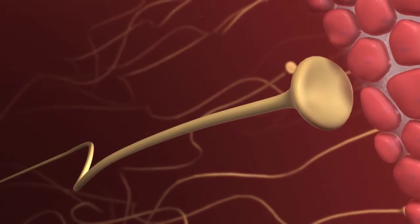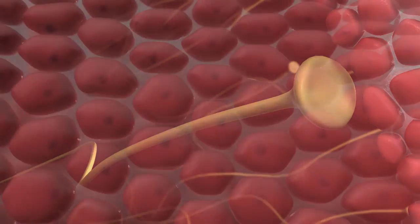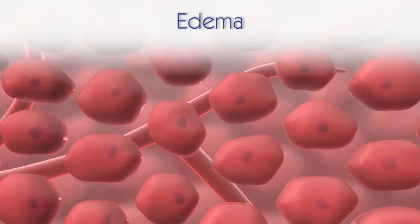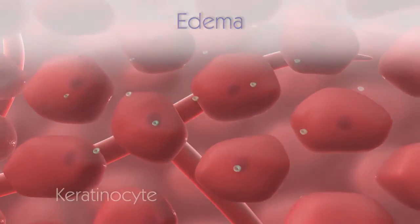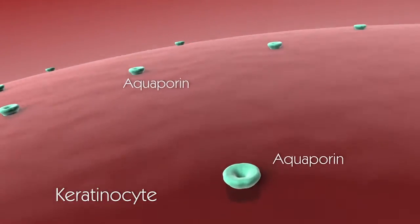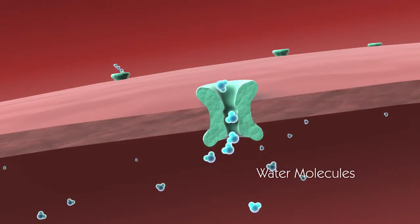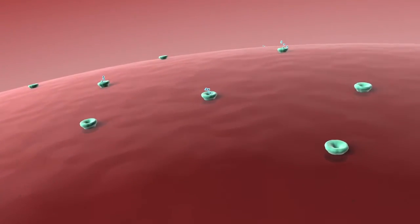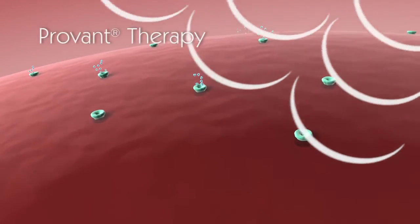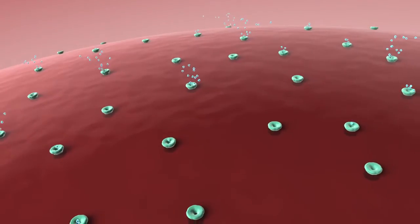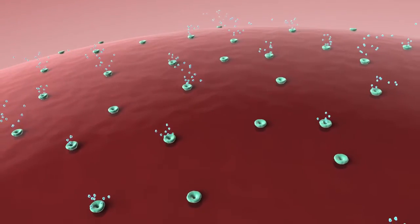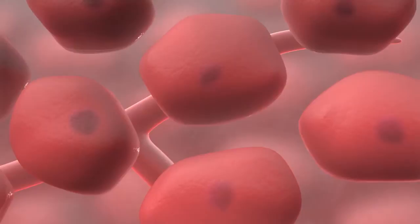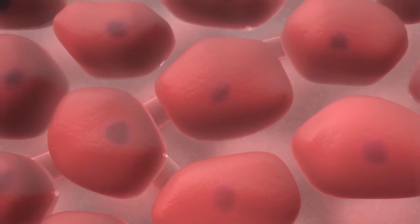While pain relief is critical, the successful treatment of inflammation involves more than just reducing pain. Inflamed tissue can become edematous, and this buildup of fluid can hinder the resolution of inflammation and pain. Aquaporins are proteins that form pores in the cellular membrane and selectively conduct water molecules into and out of the cell. During tissue inflammation, aquaporins help regulate edema. Gene expression regulated by Provant increases the number of aquaporins in many of the cells involved in resolving tissue inflammation, facilitating the exchange of fluids and expediting the resolution of edema.